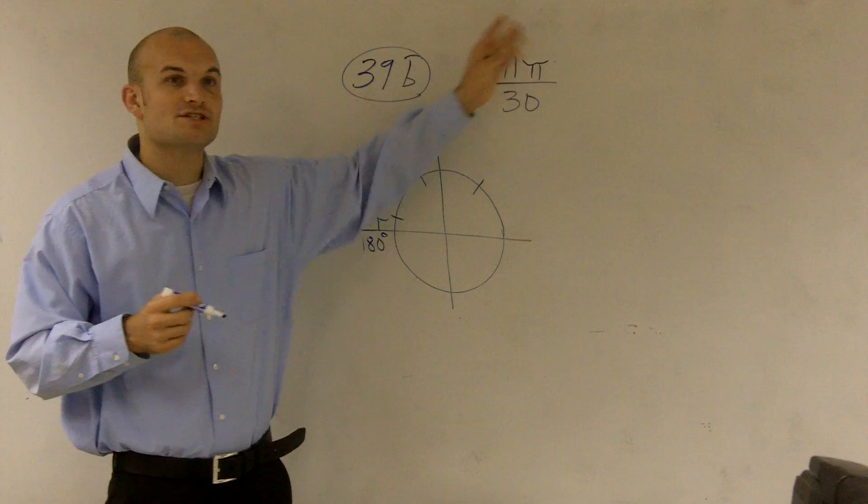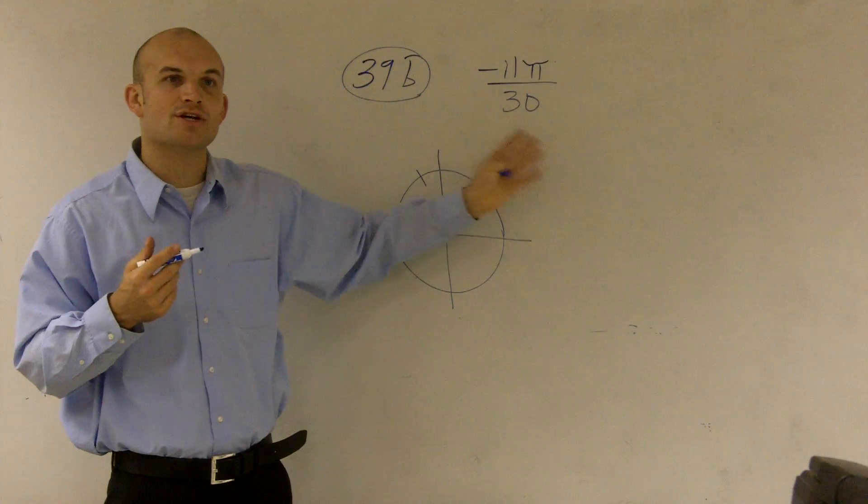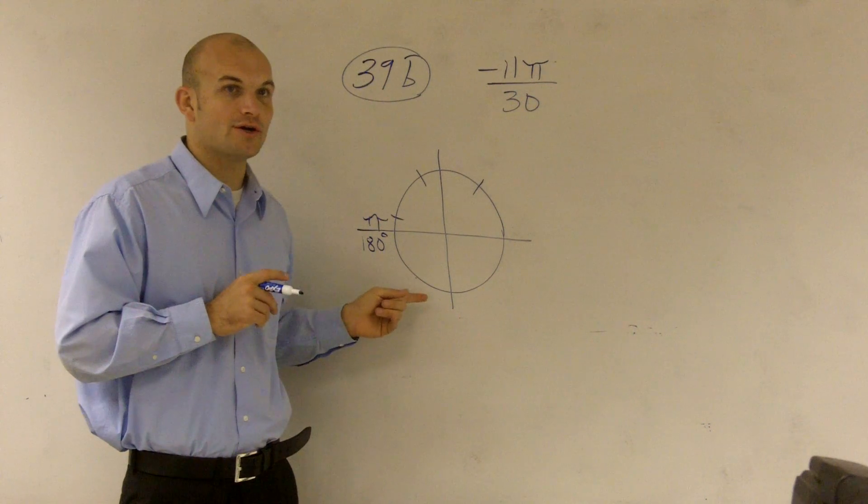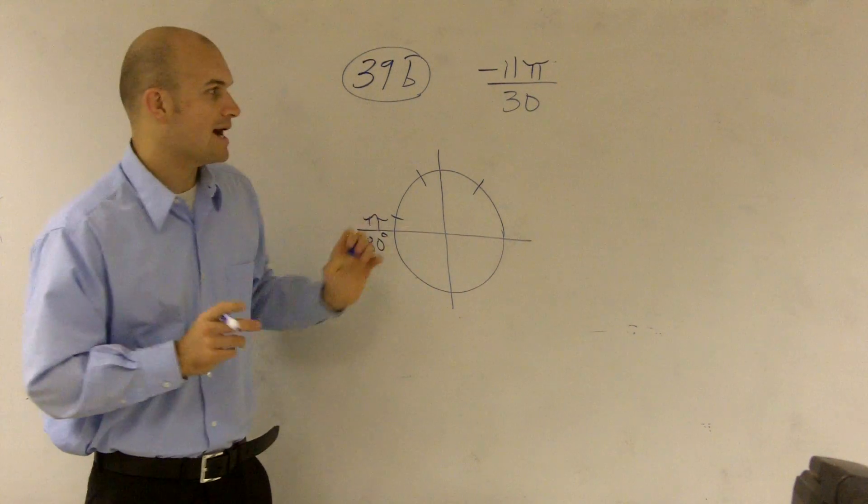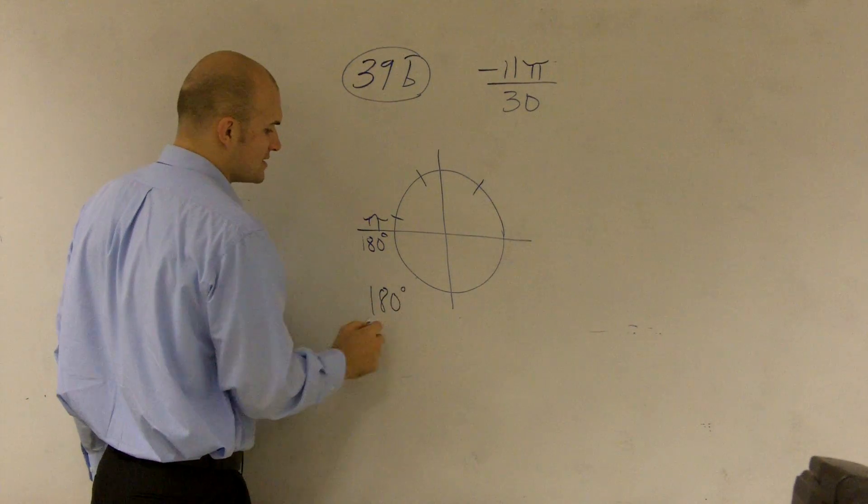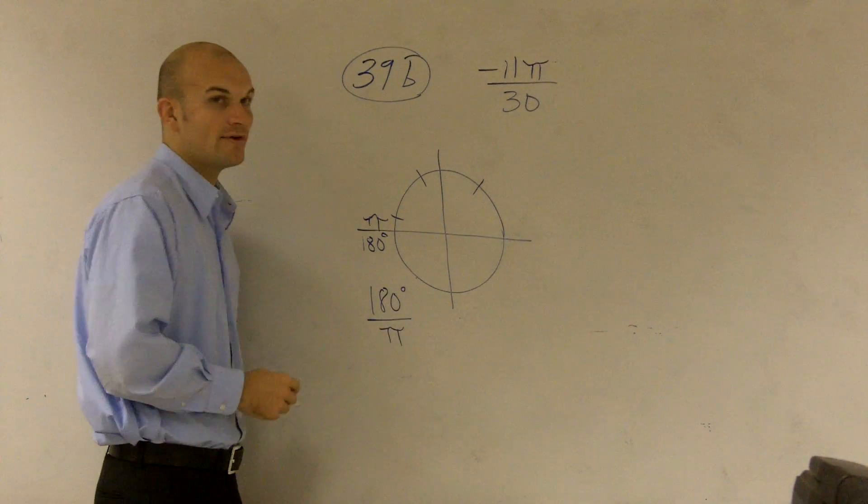So if I want to convert from radians to degrees, I need to use the ratio that pi radians is equivalent to 180 degrees. Now what I'm going to do though is I'm going to write it like this: 180 degrees is equivalent to pi radians.